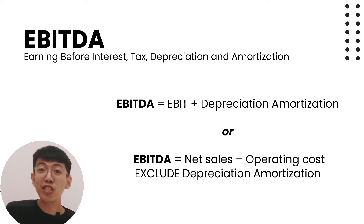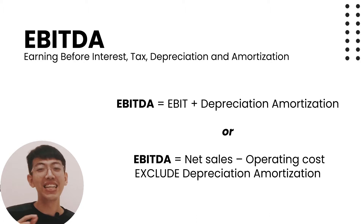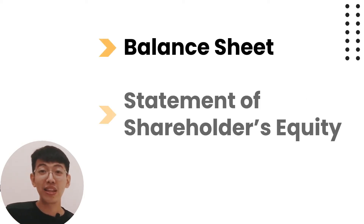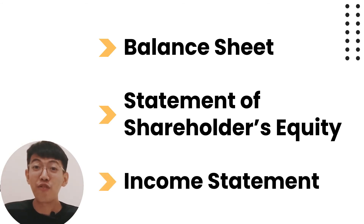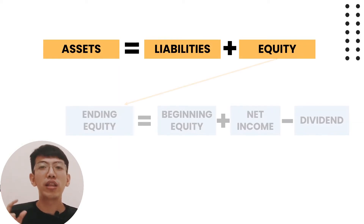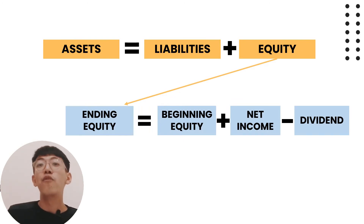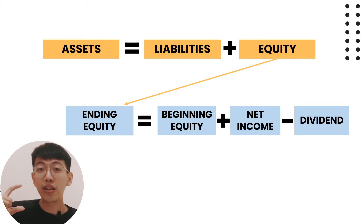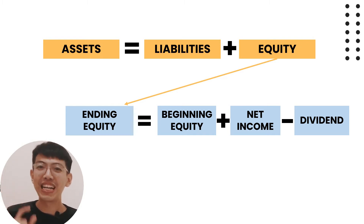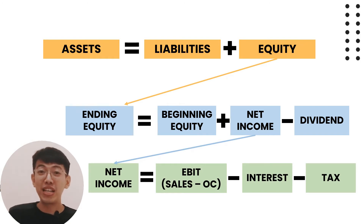Finally, you have learned three types of financial statements: balance sheet, statement of shareholder equity, and income statement. In the balance sheet, assets equal liabilities plus equity. The equity in the balance sheet comes from the statement of shareholder equity, where ending equity equals beginning equity plus profit minus dividends. The profit or net income in the statement of shareholder equity comes from the income statement.